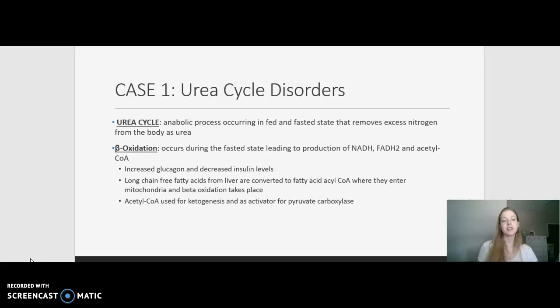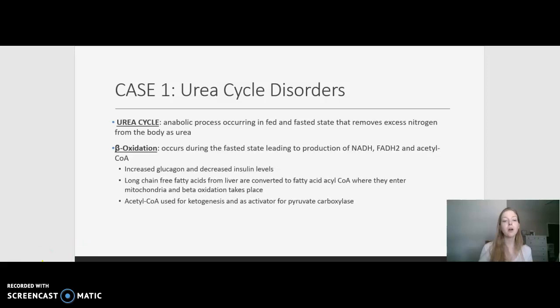Fatty acid beta-oxidation occurs during the fasted state only, when we have increased glucose levels and decreased insulin levels. During this process, long-chain free fatty acids enter into the liver where they're converted into fatty acid acyl-CoA, and then they enter into the mitochondria where beta-oxidation occurs. That goes through a series of reactions, ultimately producing NADH, FADH2, and acetyl-CoA. Acetyl-CoA is used for ketogenesis, and it is also an allosteric activator for pyruvate carboxylase, the enzyme needed for the very first step in gluconeogenesis.